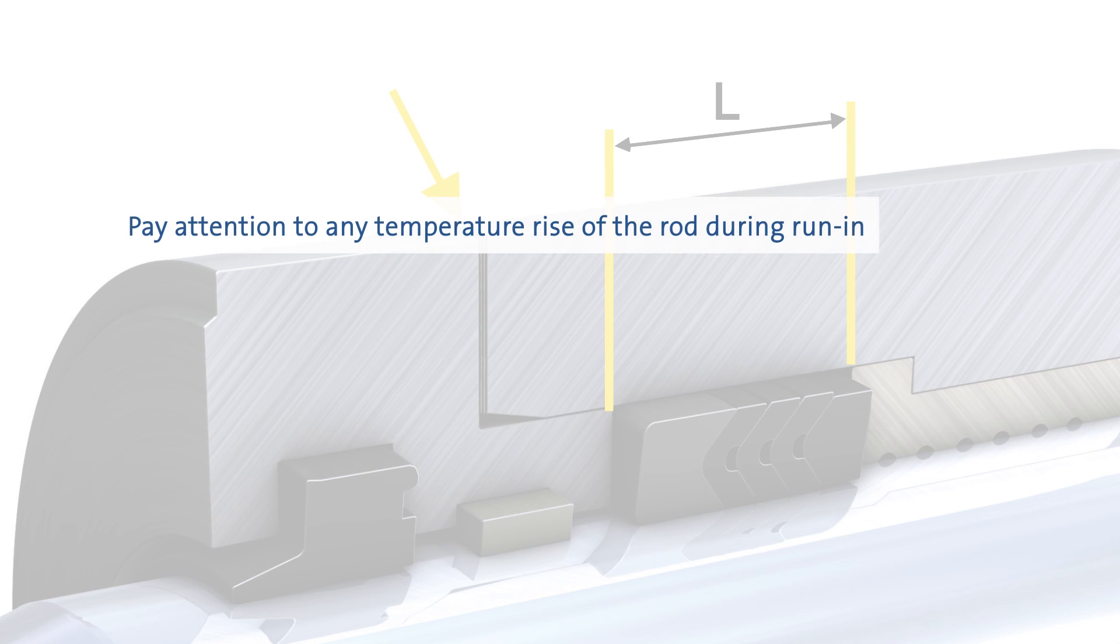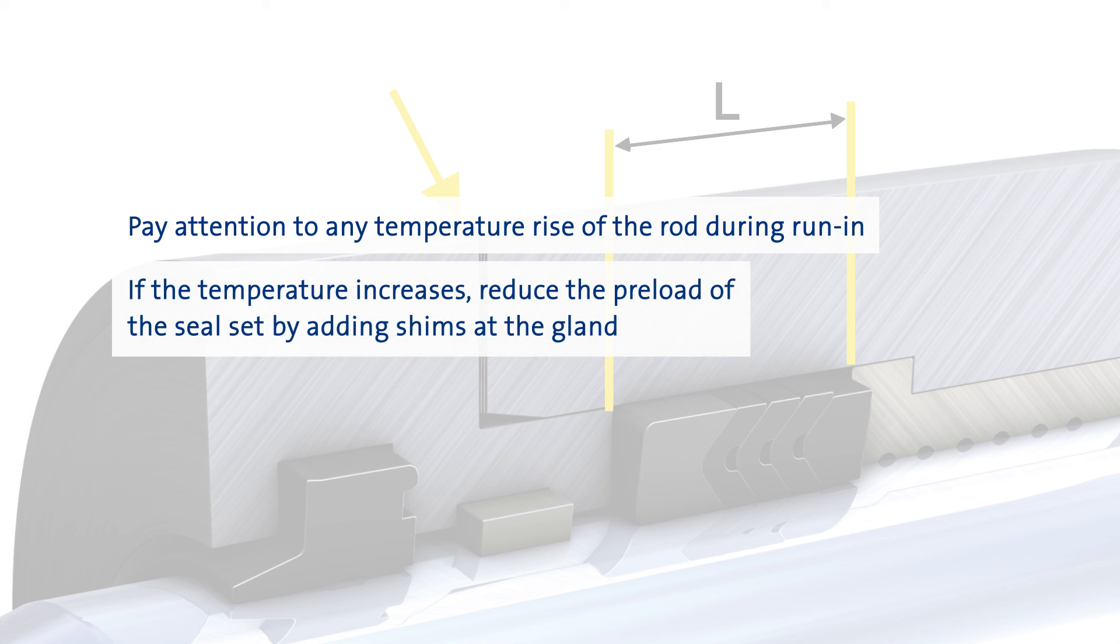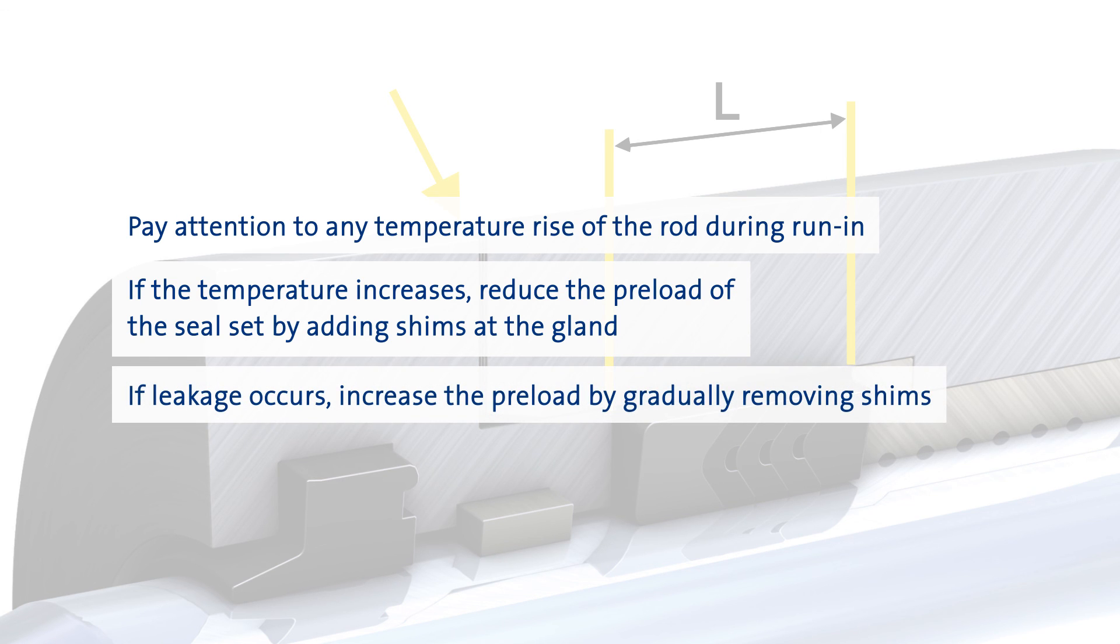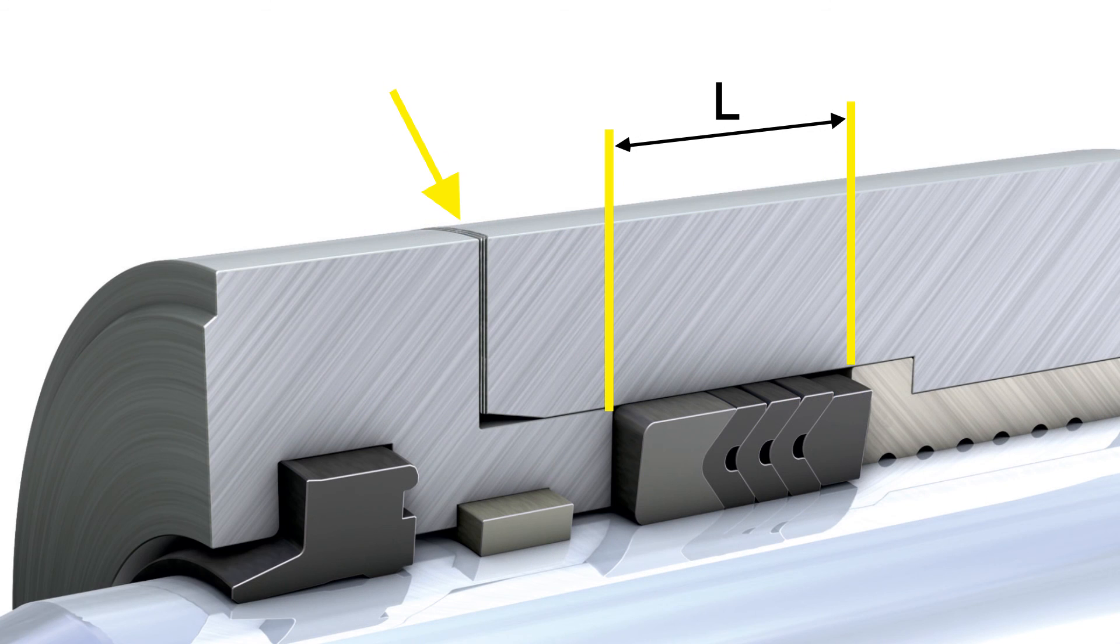Particular attention should be paid to any temperature increase of the rod during run-in. If there is a significant rise in temperature, reduce the actual pressure on the seal set by adding shims at the gland. If leakage occurs, even after an extended period of time, increase the actual pressure on the seal set by gradually removing shims.